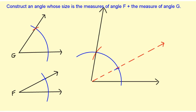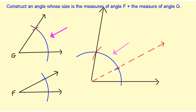So what we did is we measured angle F and marked it off here, then we took angle G and marked it off here. The dotted red line is helpful for us to see the two angles being added together, but it's not actually necessary for the construction.